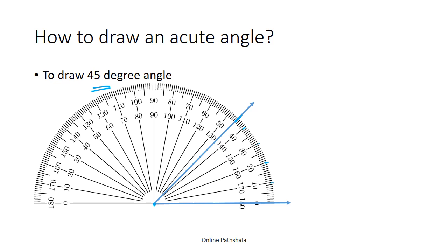So this angle is our 45 degree angle. The last but important step is to label it — this is angle ABC, and angle ABC is a 45 degree angle.